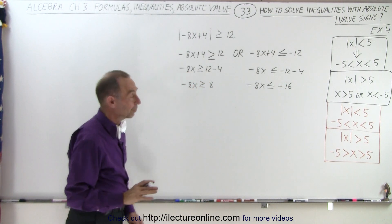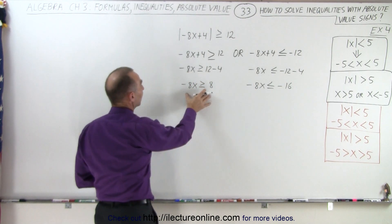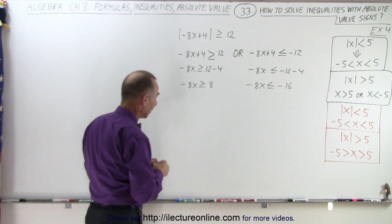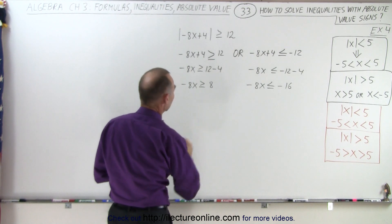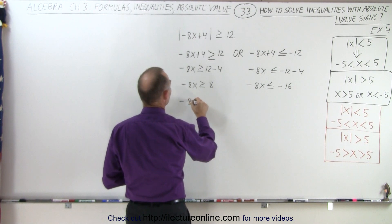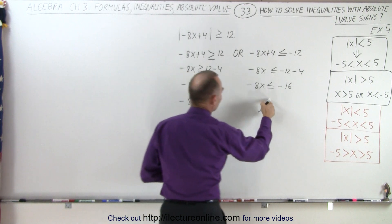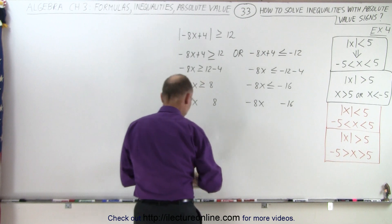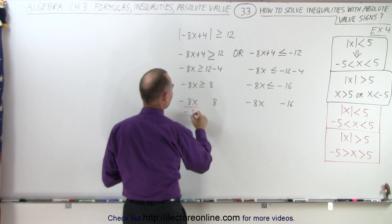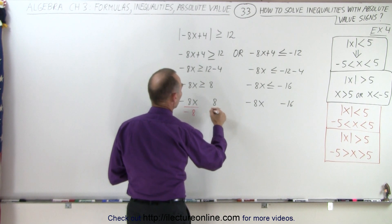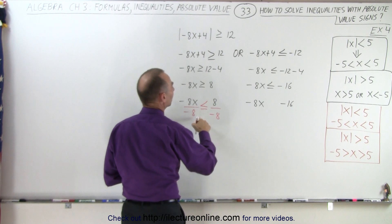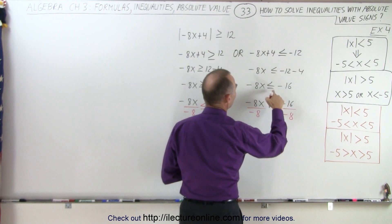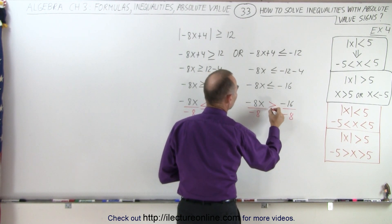Now realize we have to divide both sides by negative 8 over here and negative 8 over there to get rid of that negative 8 in front of the x. But since we must flip the inequality sign, we have to rewrite this — that's minus 8x and 8. We do the same over here: minus 8x and minus 16. And since we're going to divide both sides by negative 8, we must flip the inequality sign. This becomes less than or equal to, and over here we divide by negative 8 and flip the inequality sign, which becomes greater than or equal to.